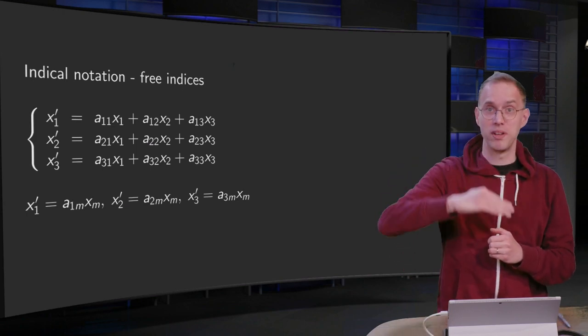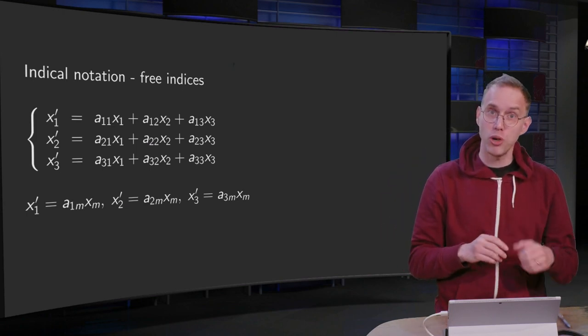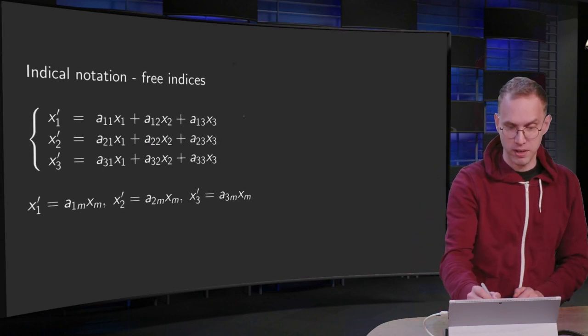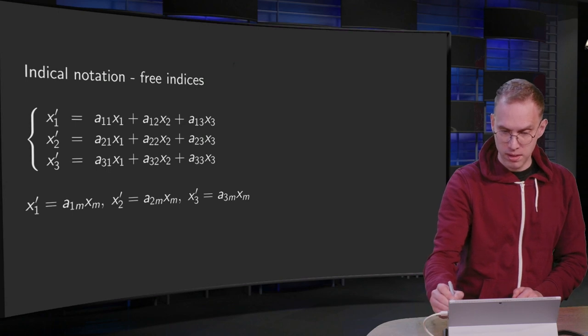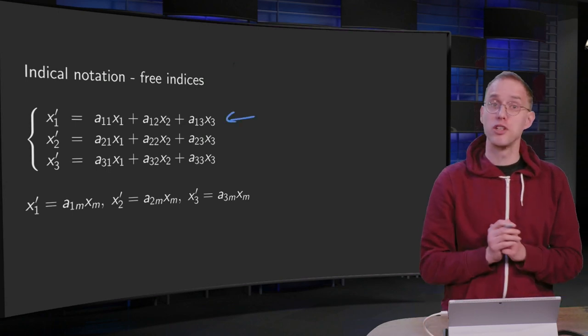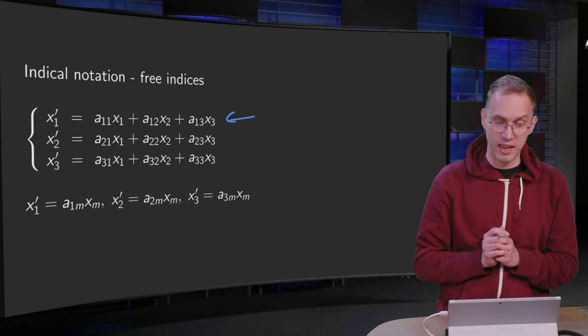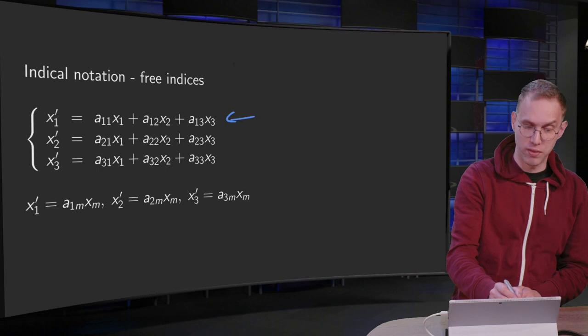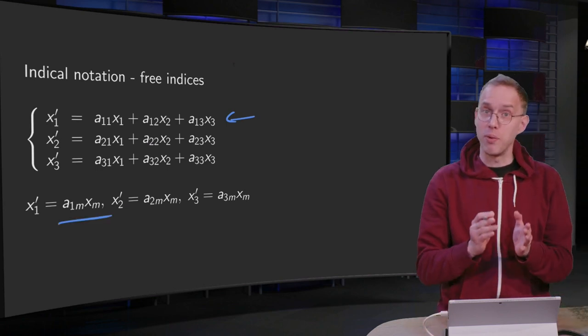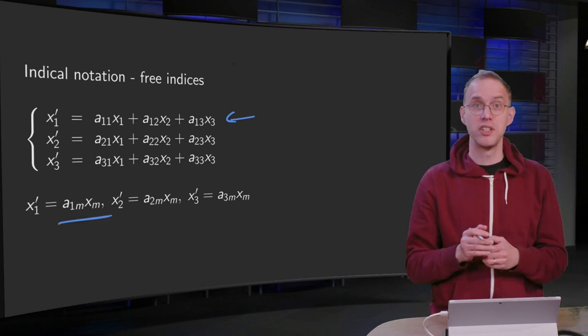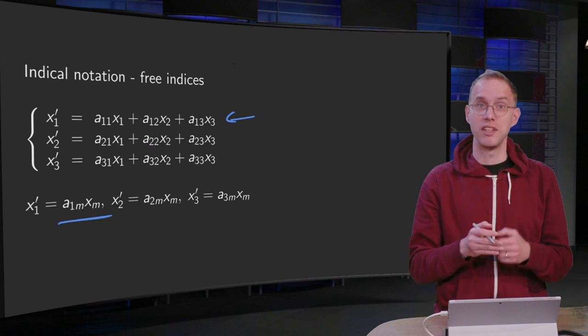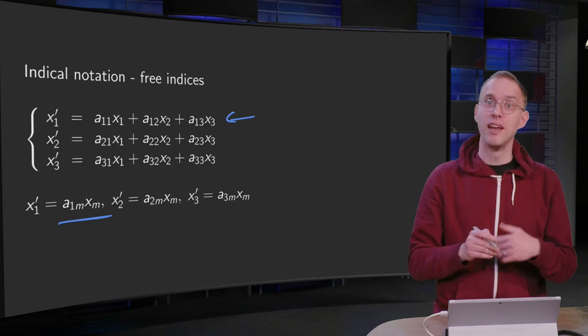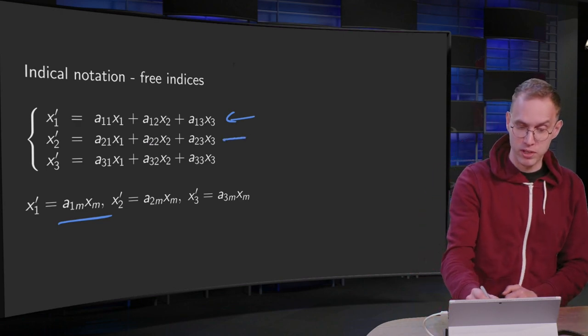You learned that you can rewrite all three of those equations shorter using index notation. For example, the first one: you are summing over the second index of the a's, so you can write this as x1 prime equals a1m xm, because that means you have to sum over the m. So you get x1 prime equals a11x1 plus a12x2 plus a13x3.